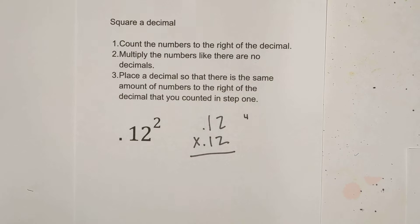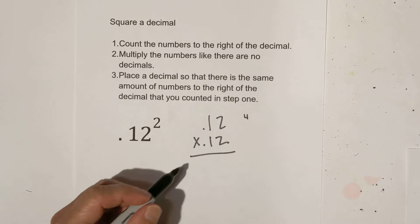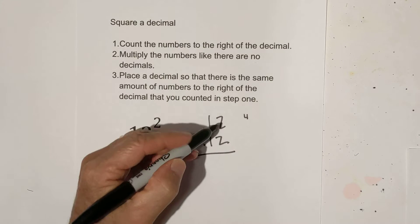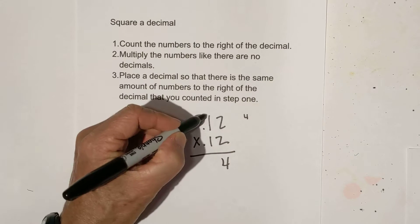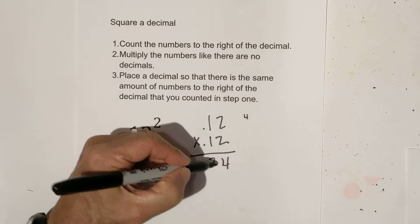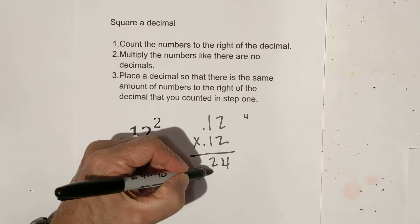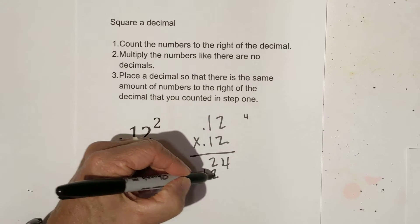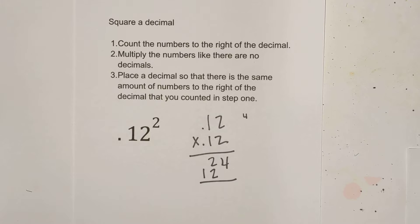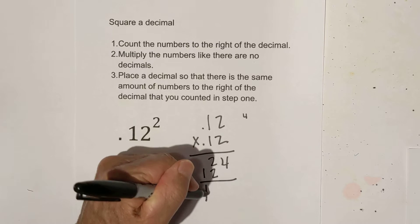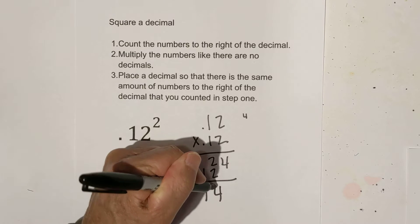We will multiply it just like there are no decimals at all. Two times two is four. Two times one is two. We have a two, a one. If you bring this down, we have 144.